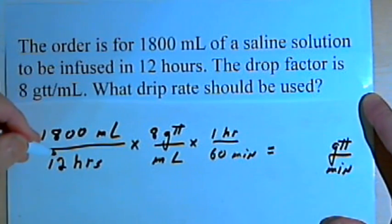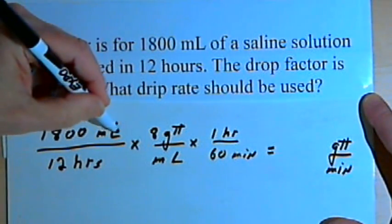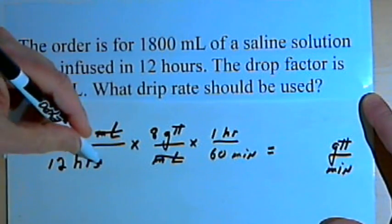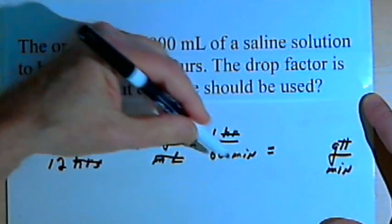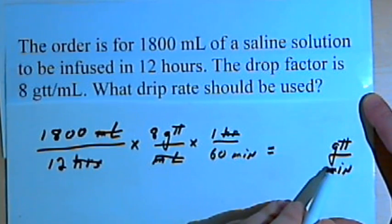Now let's cancel out the units that we can. We can cancel the milliliters and the hours, and that leaves us with just gtt and minutes, which is what we want.